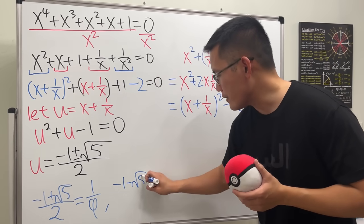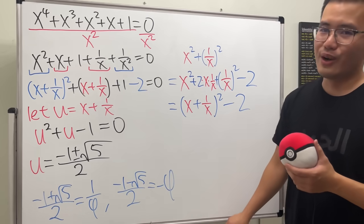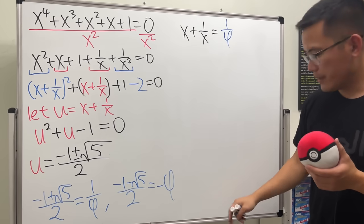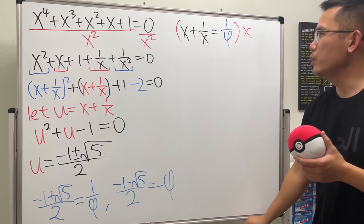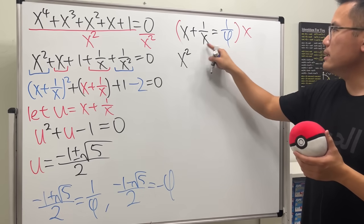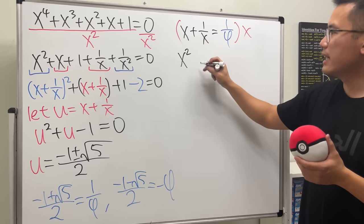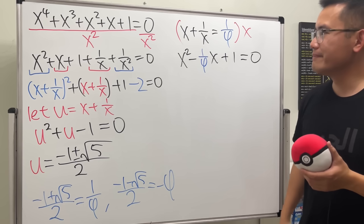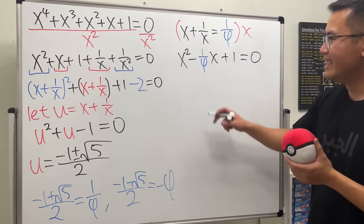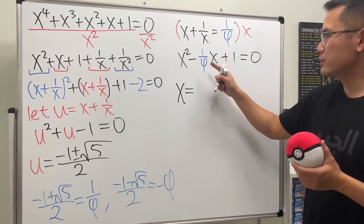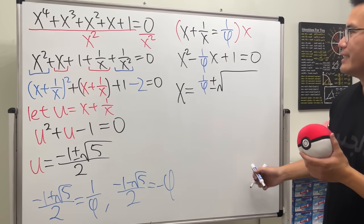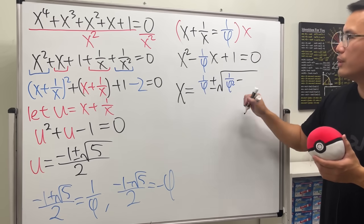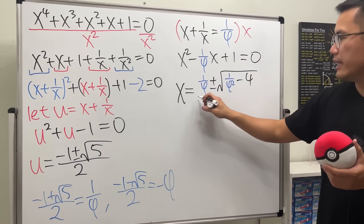Now that x plus one over x equals the reciprocal of the golden ratio, we multiply through by x to get x squared minus that value times x plus one equals zero. We apply the quadratic formula again: x equals the reciprocal of the golden ratio plus or minus the square root of that value squared minus four, all over two.